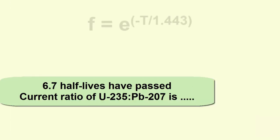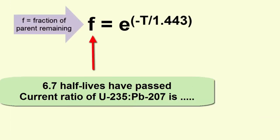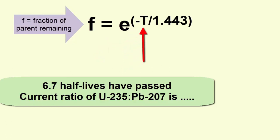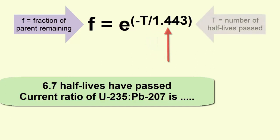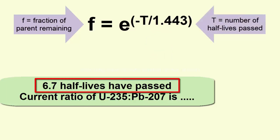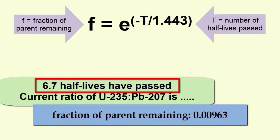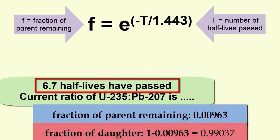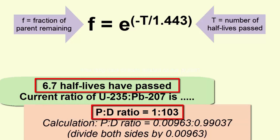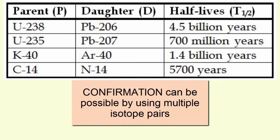To be more precise, we use this equation: the fraction of parent remaining equals e to the power of minus t divided by 1.443, where t is the number of half-lives past. Since t is 6.7, that means the fraction of parent remaining is 0.00963. The remaining 0.99037 must be daughter, and the ratio is 1 to 103. Calculating age using multiple radioactive isotope pairs is a method we use to confirm our dates.